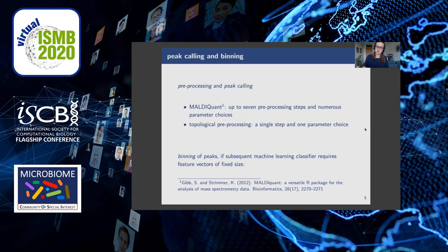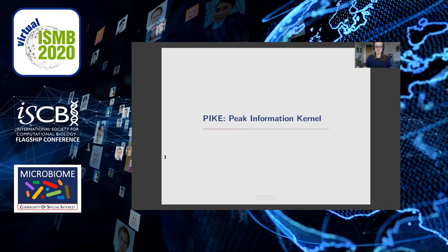In both cases, the goal of pre-processing is to detect the peaks. If the subsequent machine learning classifier requires a vector of fixed length, the peaks need to be distributed into linearly spaced bins in the binning step. The goal is ultimately to have a reliable antimicrobial resistance classifier which also gives useful confidence estimates for clinical applicability.